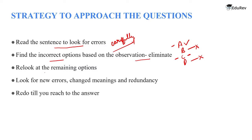Third, re-look at the remaining options. Look for new errors, changed meanings, and redundancy. We just have to omit options that have these issues. Redo until you reach the correct answer. These are the steps to follow in finding the right option.